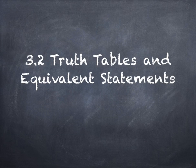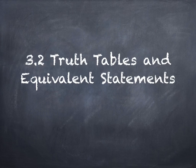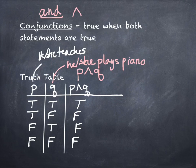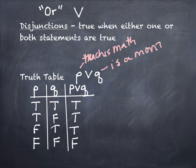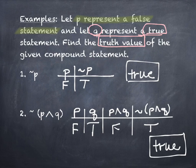Last time we started Section 3-2 and began talking about truth tables — basically an organized way of doing a table that shows all the different combinations or ways that statements can be true or false in tandem with one another. We looked at conjunctions, which are 'and' statements, disjunctions, or 'or' statements, and we talked about truth values, which is pretty much where we left off.